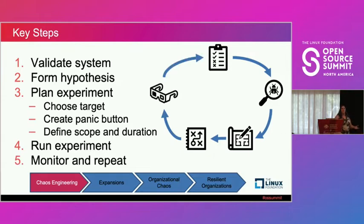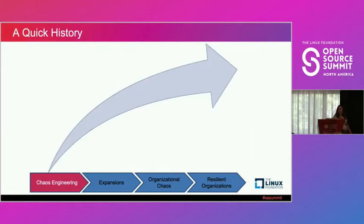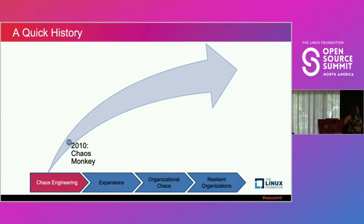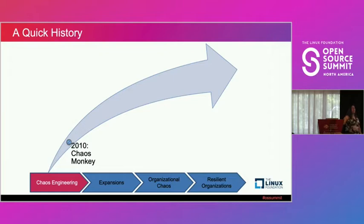It's an iterative, disciplined process — not a run-once-and-done thing. A quick history: chaos engineering came from Netflix. They moved to AWS around 2008 and committed all infrastructure to it. Around 2010, they realized cloud compute environments fail more regularly and unpredictably than a data center you've invested heavily in, so you have to design systems to accommodate that. They started small with Chaos Monkey in 2010.